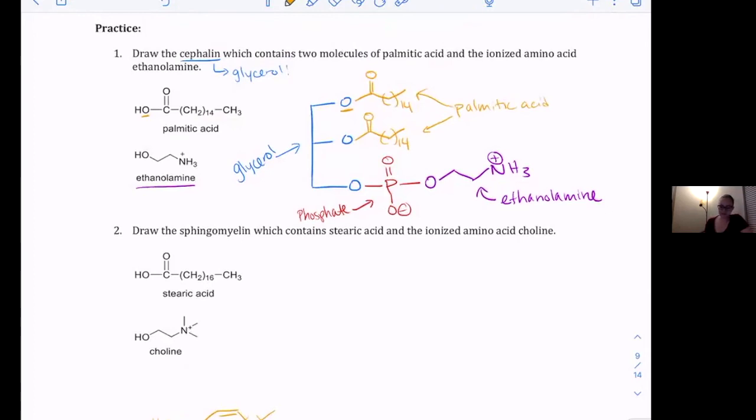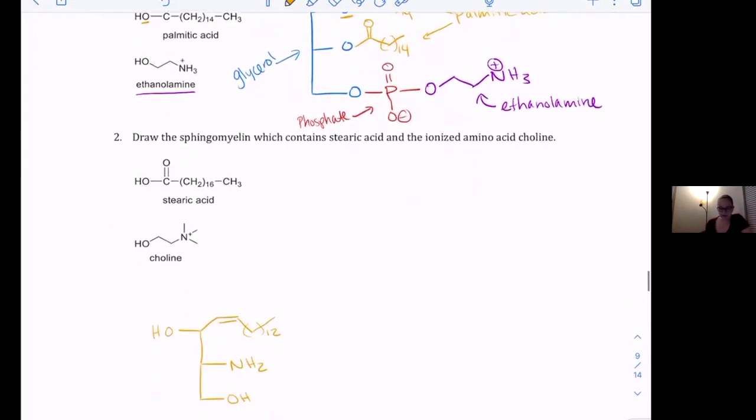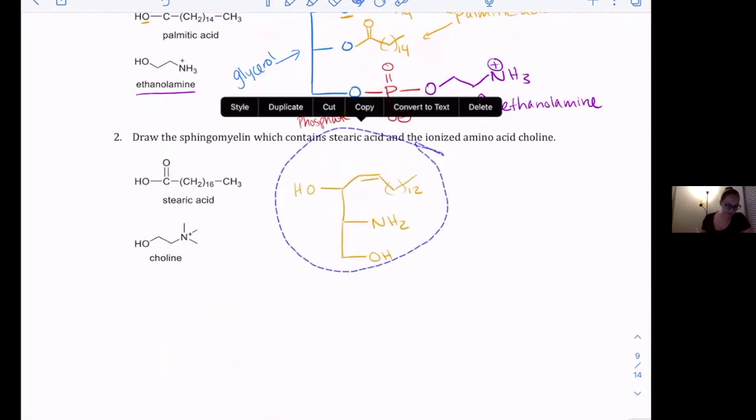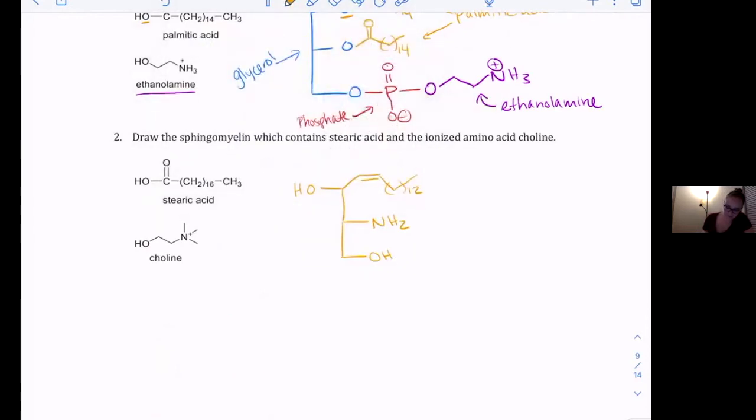Okay, so that's the answer for our first one. Second one is draw the sphingomyelin which contains steric acid and the ionized amino acid choline. So the sphingomyelins have the sphingosine backbone. Instead of drawing all of this out I copied it from above and hid it from you guys a little bit. So this is our sphingosine backbone.